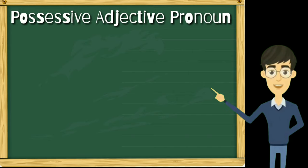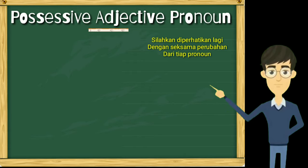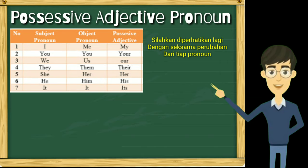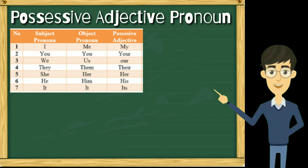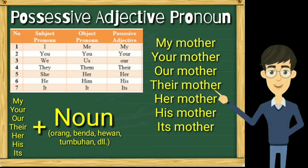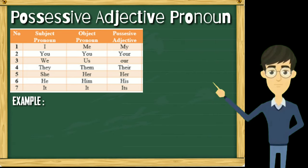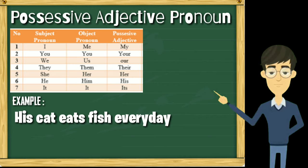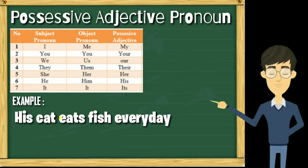Jenis pronoun yang terakhir untuk pembahasan kita kali ini adalah possessive adjective pronoun. Mereka adalah my, your, our, their, her, his, and its. Pronoun jenis ini adalah kata ganti yang menunjukkan kepemilikan dari sesuatu, dan biasanya diikuti dengan noun — orang, benda, hewan, tumbuhan, dan lain-lain — milik orang yang bersangkutan. Posisi possessive adjective pronoun adalah sebelum noun milik yang bersangkutan. Contoh: 'His cat eats fish every day.' Di sini cat atau kucing itu milik dari dia laki-laki, dan lihat posisi pronoun — berada sebelum noun, yaitu 'cat'.